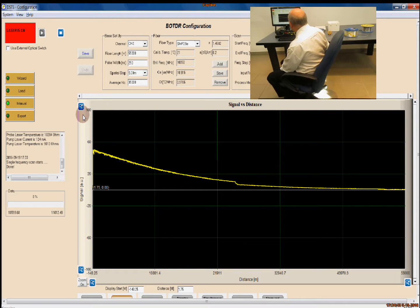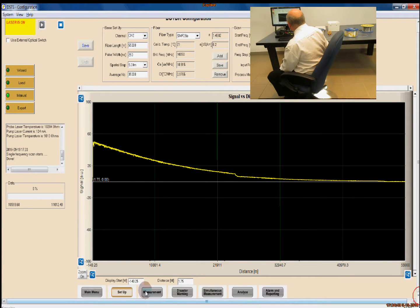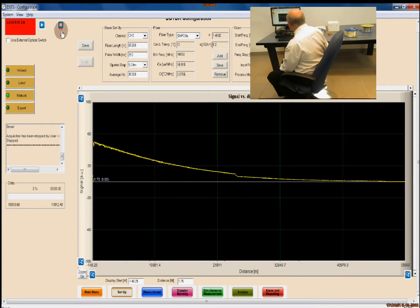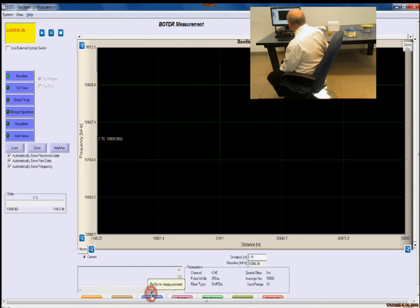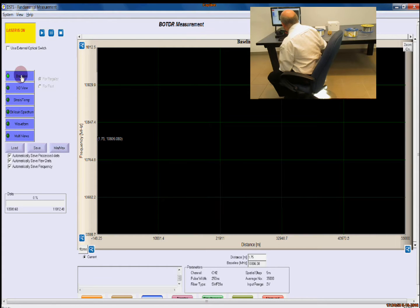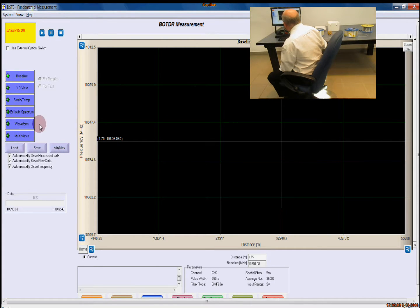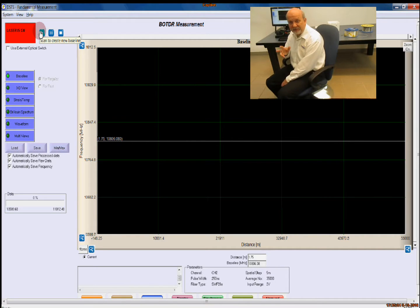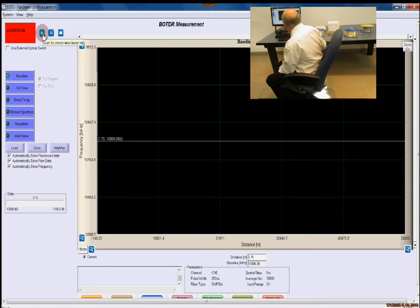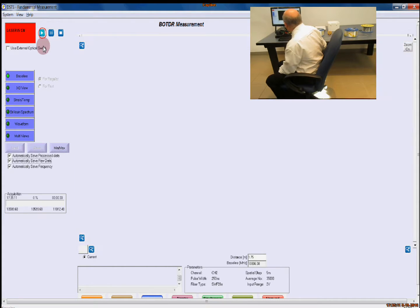Once we're happy that we're getting a signal along the entire length of the device, we can then go and select stop laser and select measurement. The first thing we're going to do is take a baseline measurement. We're going to take a brand new baseline measurement and save it for our setup. We hit scan and start creating our baseline.